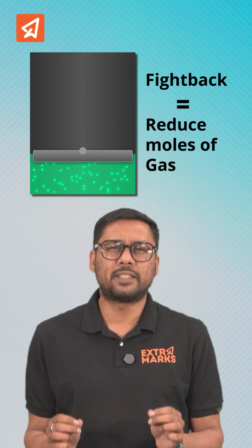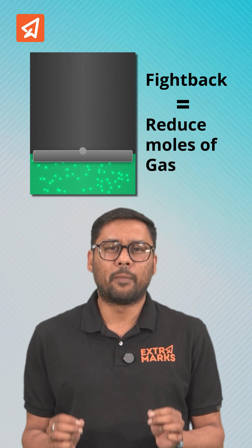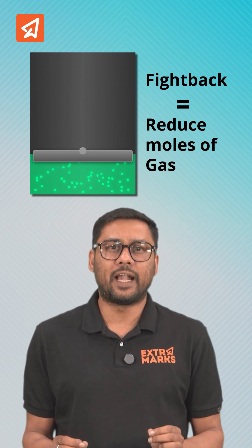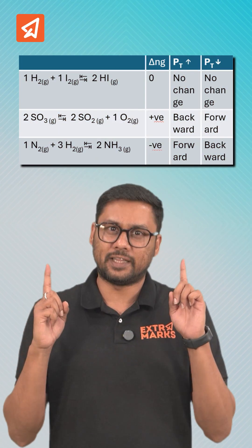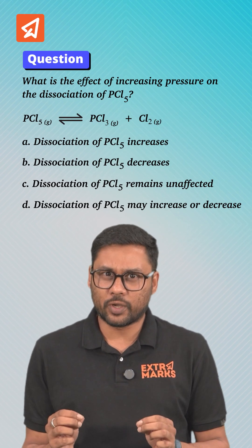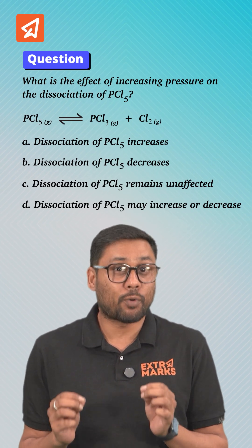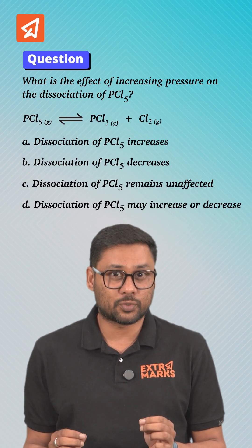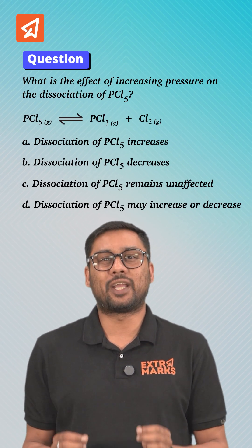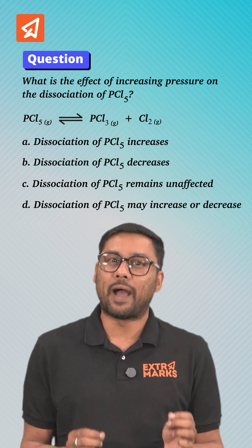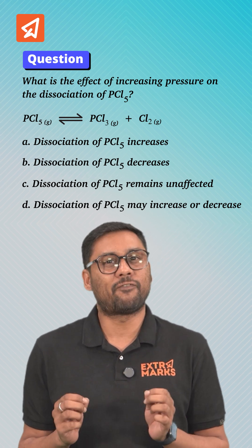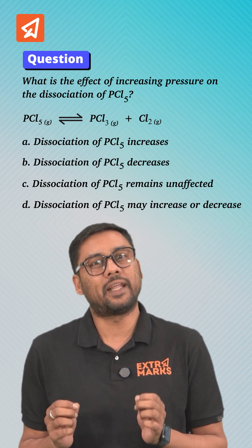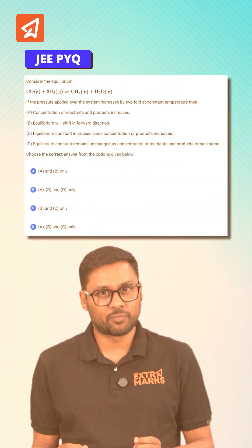This can be easily calculated by calculating the delta N of these reactions, like in these cases. Coming back to our question, we know that the delta N is positive, so the equilibrium will go backward by increasing the pressure and forward by decreasing the pressure.